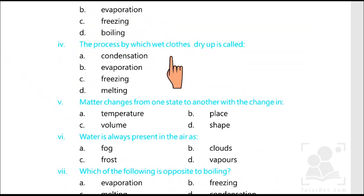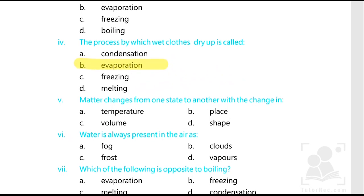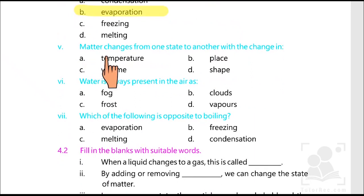Evaporation. The process by which wet clothes dry up is called evaporation. The matter changes from one state to another with a change in temperature.